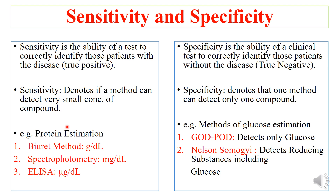Protein can be estimated by various methods. Three examples are given here. The biuret method is generally used to measure total protein in serum, because protein concentration in serum is very high and present in grams per deciliter. The spectrophotometric method measures protein in milligrams per deciliter and may be used for proteins present in other biological fluids such as urine.